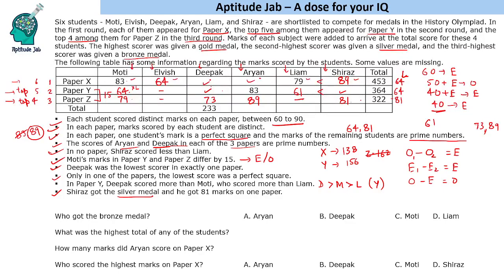For paper Y, we need two values summing to 156, each greater than 64. The possibilities are: 67 and 89, or 73 and 83. Since Aryan has already scored 83 in paper Y, that combination is eliminated. So the values must be 67 and 89. Shiraz scored 89 in paper Z, so in paper Y Shiraz scores 67 and Deepak scores 89.